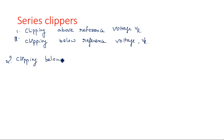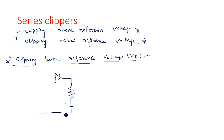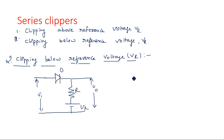Let me first draw the circuit diagram so that you can understand. For the above reference voltage configuration, the diode is taken in the reverse direction. The circuit has R and Vr with output V0, and the reference voltage Vr, R, and the diode. Now, the clipping action and output depend on two cases: what happens when input is less than Vr, and what happens when input is greater than Vr.